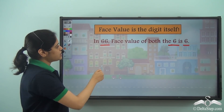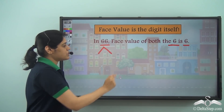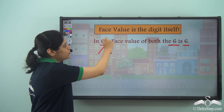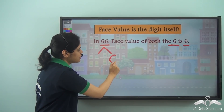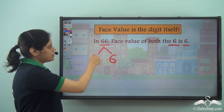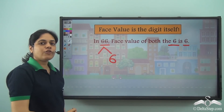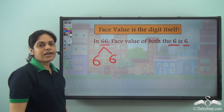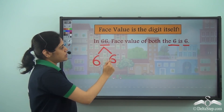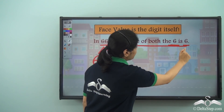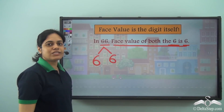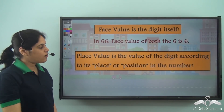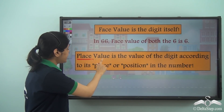So in 66, we see that there are two 6s. If I ask you the face value of this 6, it will be 6. The face value of the 6 in the tens digit will be 6 again. So in 66, the face value of both the 6s is 6, and we have something called place value.